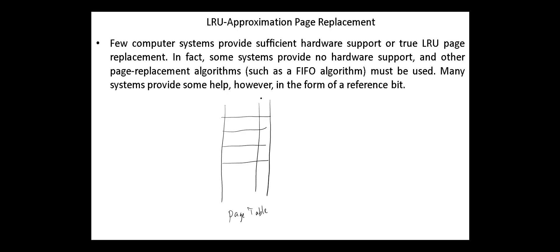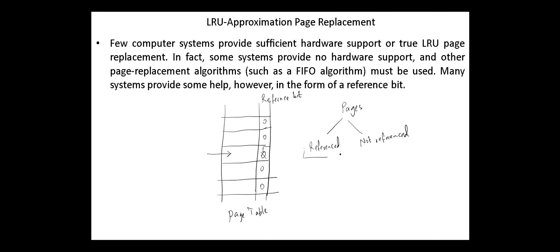Many systems provide a reference bit for every entry in the page table. Initially, all bits are set to zero. This bit is set to one any time the page is accessed. One bit of precision is enough to classify pages into two types: referenced and not referenced. Pages with zero in the reference bit have not been referenced, and pages with a reference bit of one have been referenced. The operating system is able to clear any reference bit, and this action is useful in some page replacement algorithms.